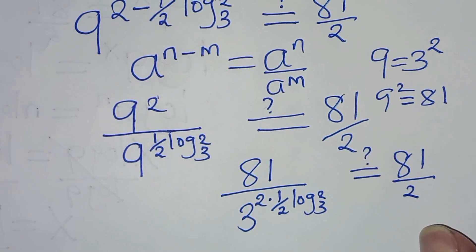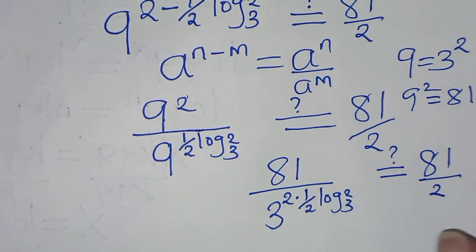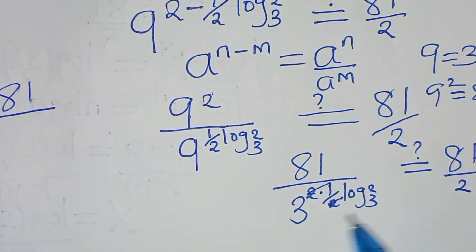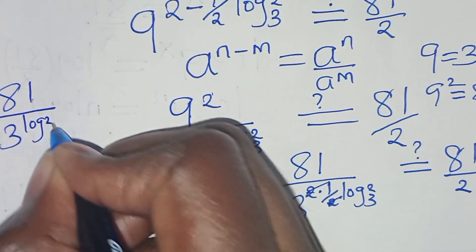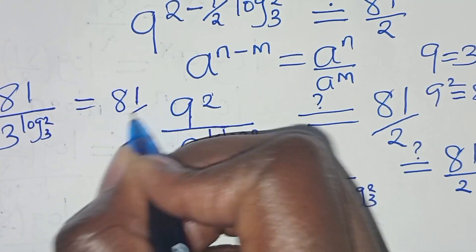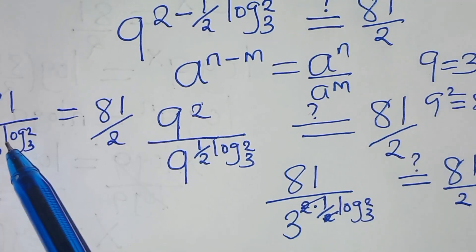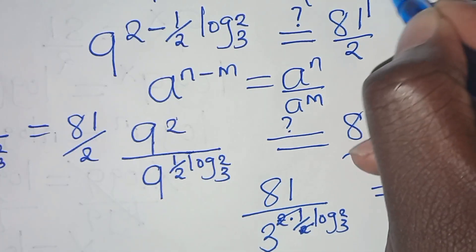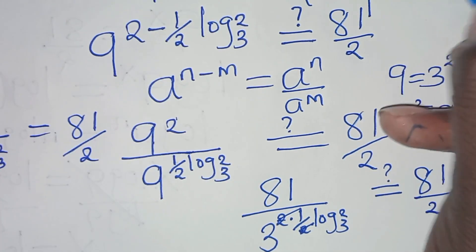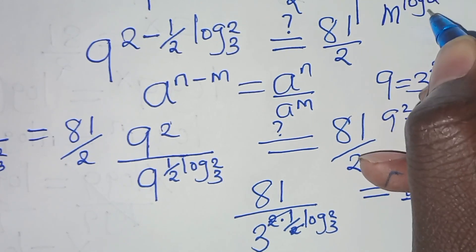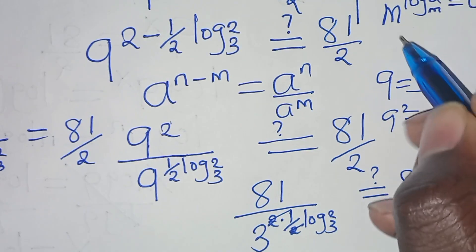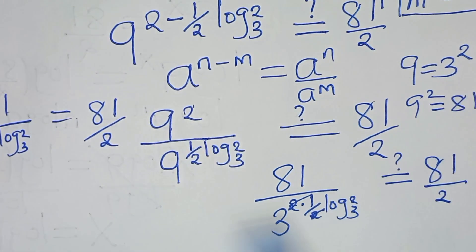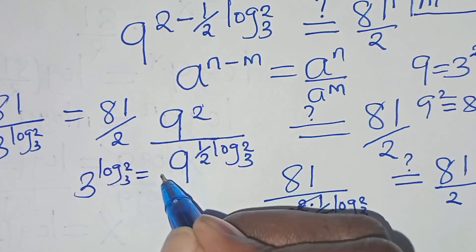The 2 and one-half simplify, so we now have 81 over 3 to the power of (log base 3 of 2), which should equal 81 over 2. Now 3 to the power of (log base 3 of 2) is in the form of m to the power of log base m of a, which gives us a. Applying this logarithm property, 3 raised to the power of log base 3 of 2 equals 2.